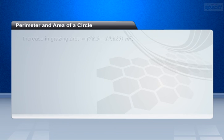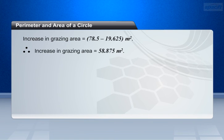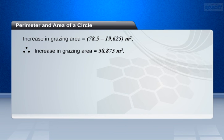Now, the increase in grazing area is calculated by finding the difference between the two areas. Increase in grazing area equals area grazed when length of rope is 10 meters minus area grazed when length of rope is 5 meters. This is equal to 78.5 minus 19.625 meter square. Therefore, increase in grazing area equals 58.875 meter square.